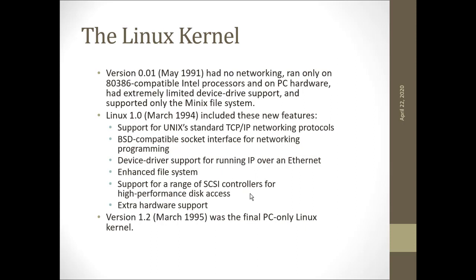We will speak about the various versions of Linux kernel here. Version 0.01 came in May 1991 and had no networking features. It ran only on 80386-compatible Intel processors and on PC hardware. It had extremely limited device driver support and supported only the Minix file system.